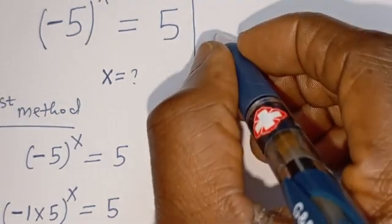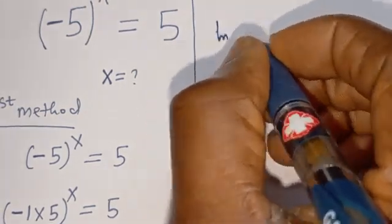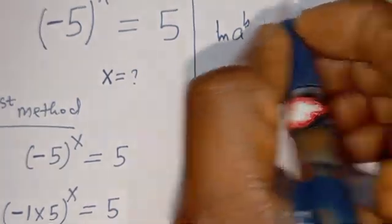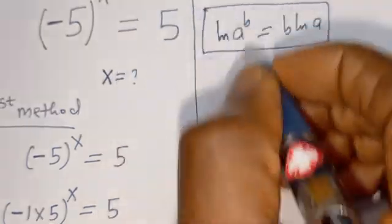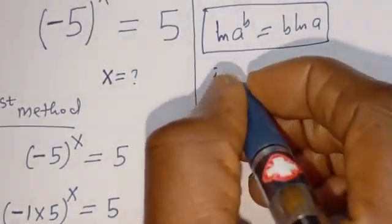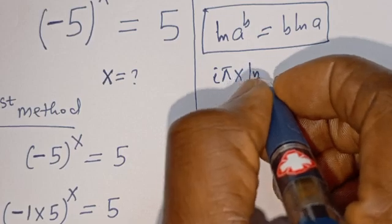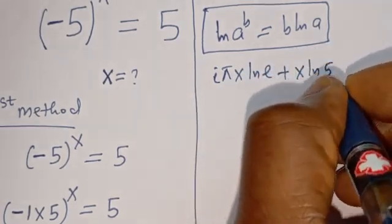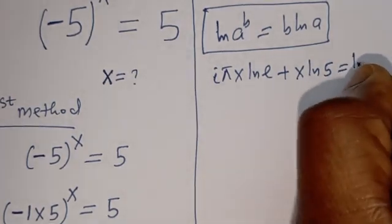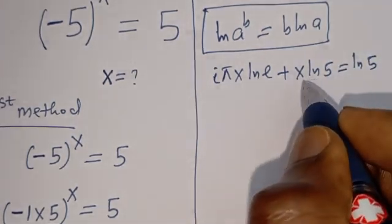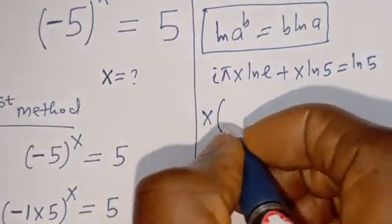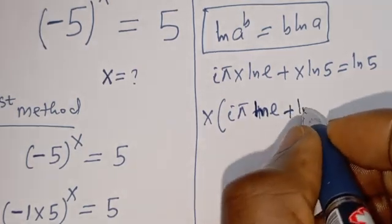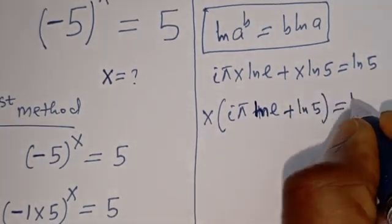Also, if you have ln of a to the power of b, this is equal to b times ln of a. Then the equation becomes: i pi s times ln of e plus s times ln of 5 is equal to ln of 5. Now, s is common here — let's bring it out. We have s times bracket i pi ln of e plus ln of 5 is equal to ln of 5.